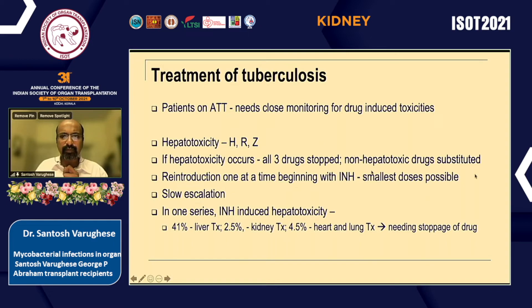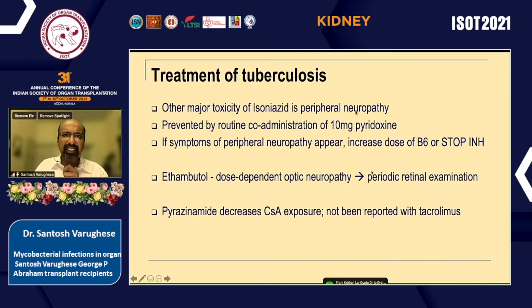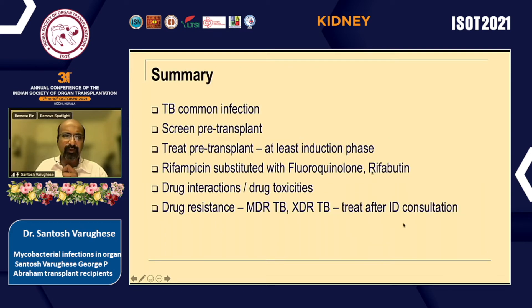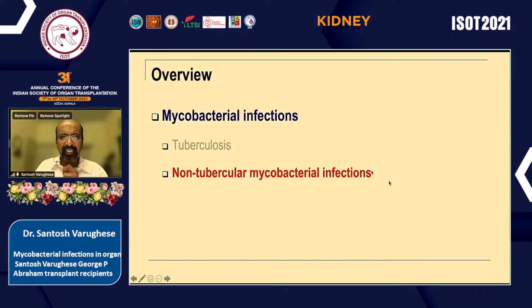Patients require careful monitoring for toxicities, especially from INH, rifampicin, and pyrazinamide. With hepatotoxicity, all drugs are stopped, substituted with non-hepatotoxic drugs, and then INH is reintroduced at small doses with slow escalation. INH-induced liver toxicity may be as high as 40 percent in liver transplant series, requiring drug discontinuation. Peripheral neuropathy is managed with pyridoxine; ethambutol causes dose-dependent optic neuropathy. Pyrazinamide decreases cyclosporine exposure, which does not occur with tacrolimus. In summary: screen pre-transplant, treat pre-transplant through at least the induction phase, use rifampicin with difficulty or substitute a fluoroquinolone or rifabutin, and monitor for drug toxicity and drug resistance with ID consultation.